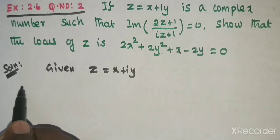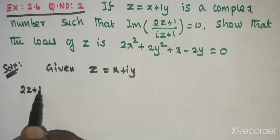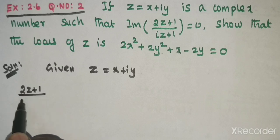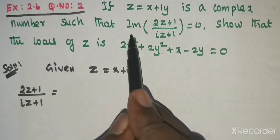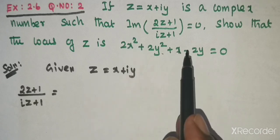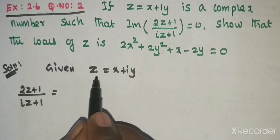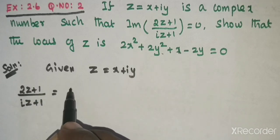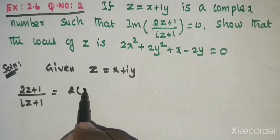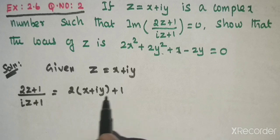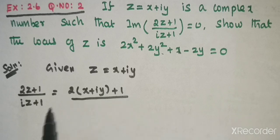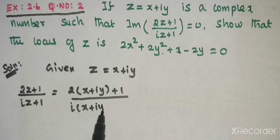Consider 2z plus 1 divided by iz plus 1. Substituting z equal to x plus iy: the numerator is 2 into x plus iy plus 1, and the denominator is i into x plus iy plus 1.